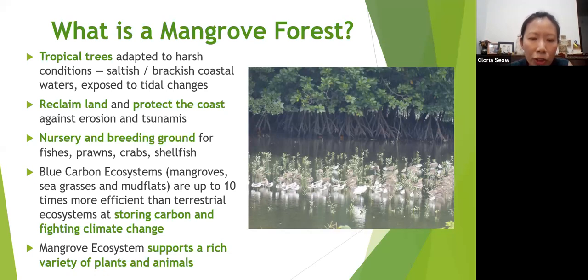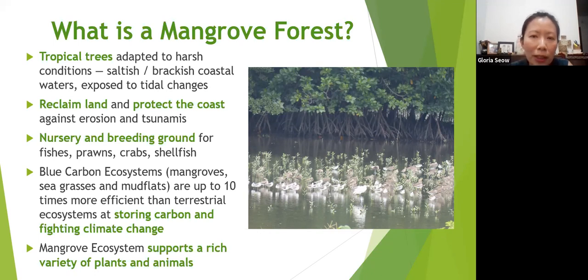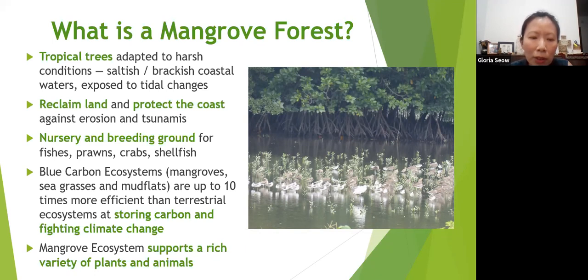Mangroves are also nurseries and breeding grounds for fishes, crabs, and shellfish. In fact, a lot of commercially important fishes start out their life in mangroves and later move into coral reefs and seagrass beds. Mangroves are part of the blue carbon ecosystems, which also comprises seagrass and mud flats, and they are actually ten times more efficient than terrestrial ecosystems at storing carbon and fighting climate change.